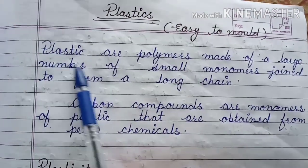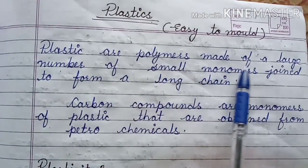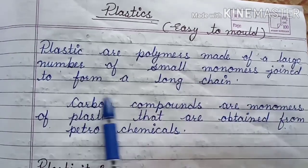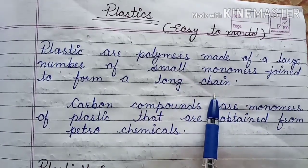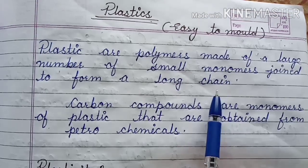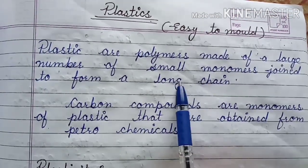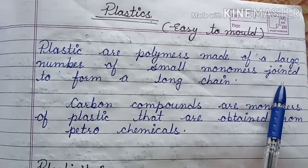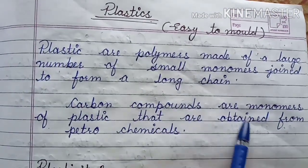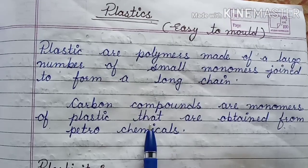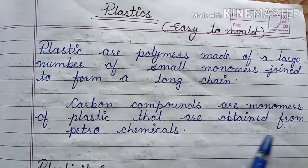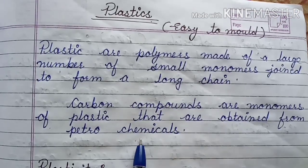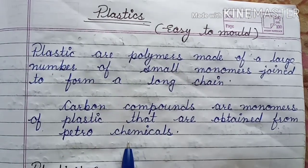What is plastic? Plastics are polymers made of a large number of small monomers joined together to form a long chain. The monomers are carbon compounds that are obtained from petrochemicals.